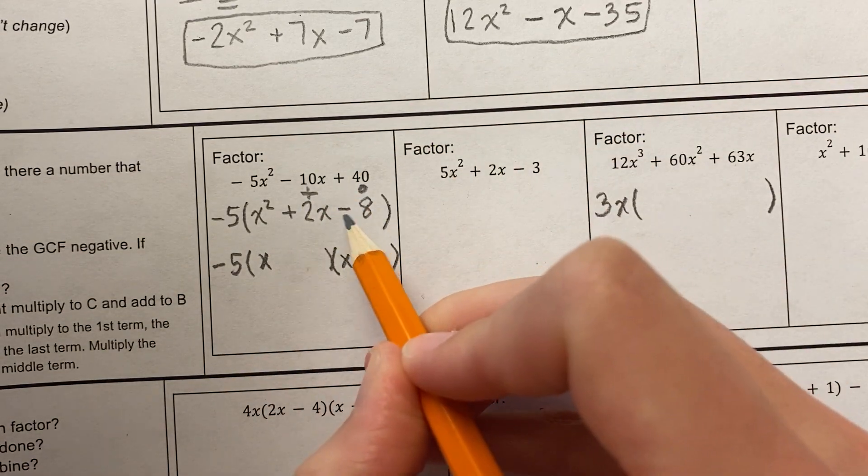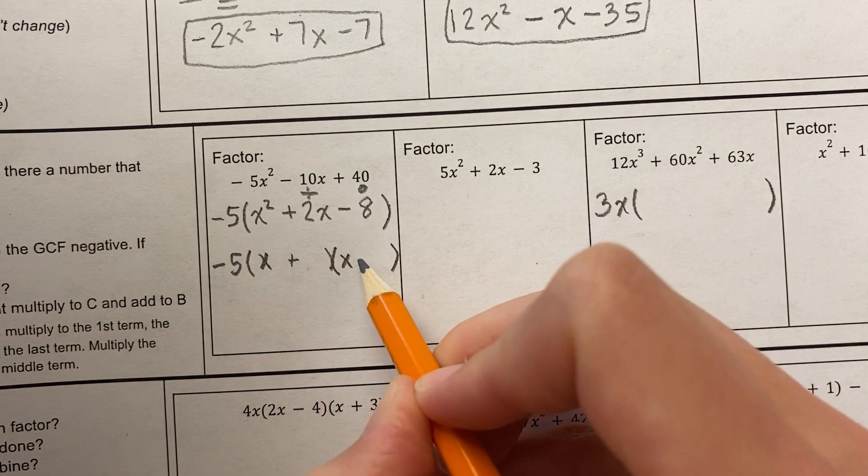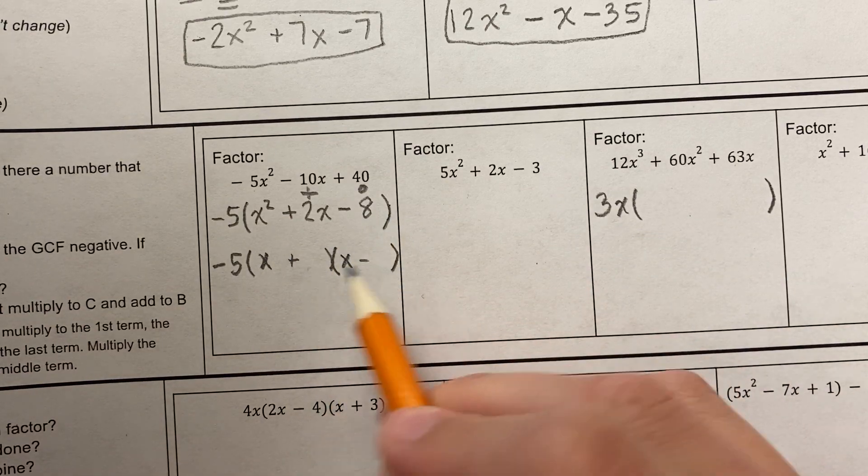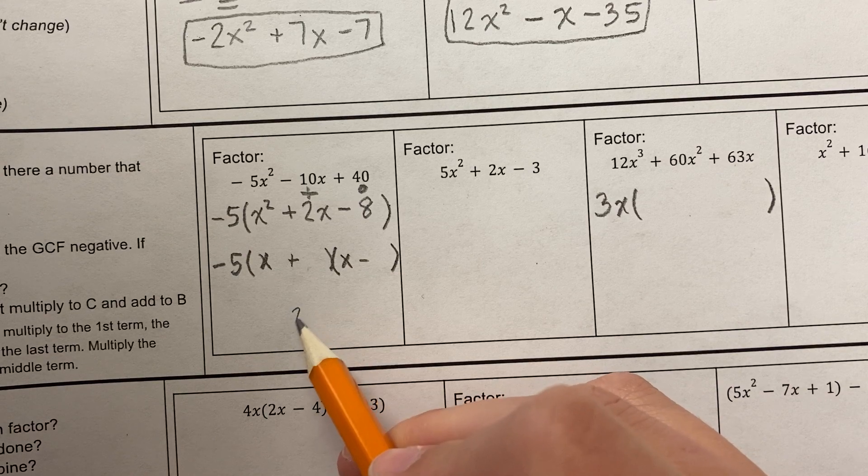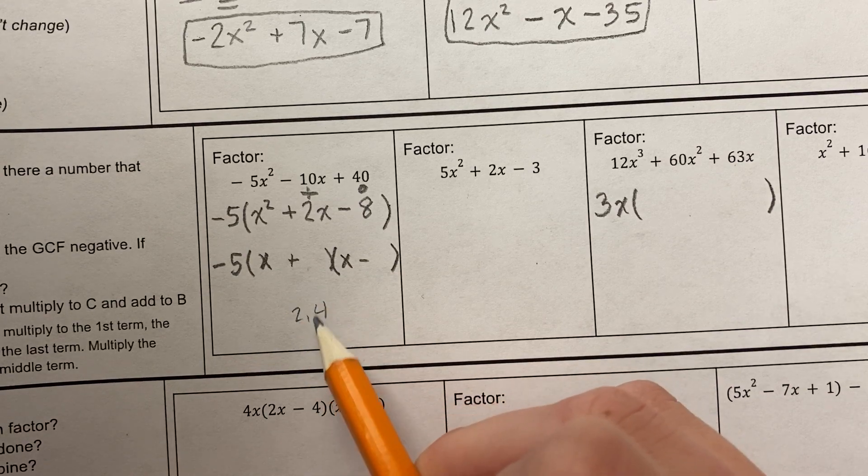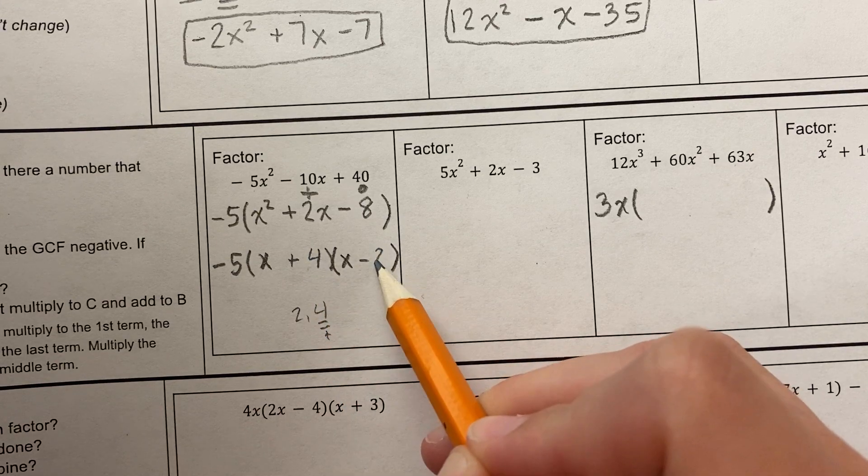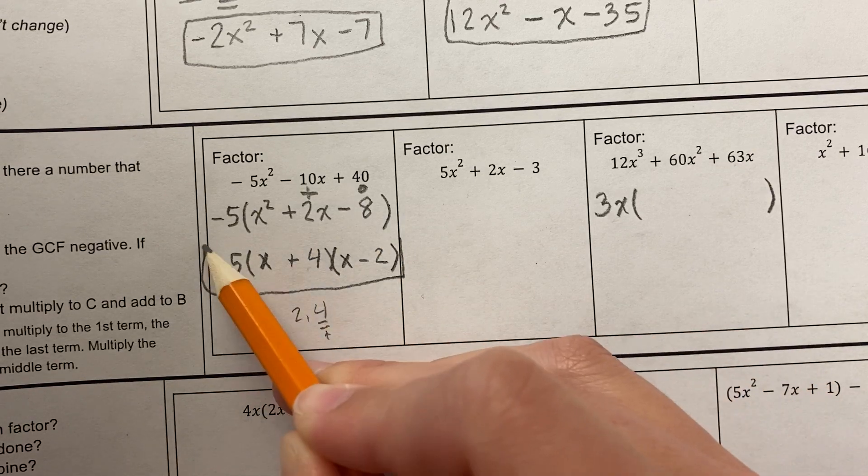Now, I need two numbers that multiply to negative eight and add to two. If they're gonna multiply to a negative, I know I need a positive and a negative. Let's see, numbers that multiply to eight, and when I subtract them, because they're different signs, I'm gonna get two. So those numbers are two and four, and I want them to come out to positive, so I'm gonna make the larger number positive, and the smaller number negative, and that's my answer.